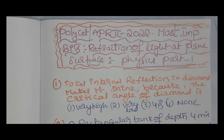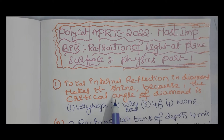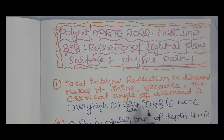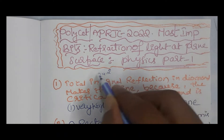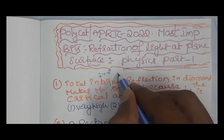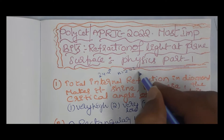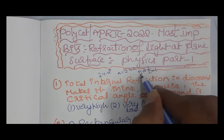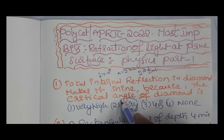Most important for practicing: total internal reflection in diamond. Diamond sparkles because the critical angle of diamond is 24.4 degrees, whereas the refractive index of diamond n is 2.42. We know n is inversely proportional to critical angle — that is why as the refractive index is higher, the critical angle is lower.